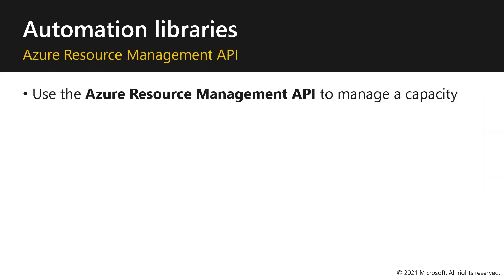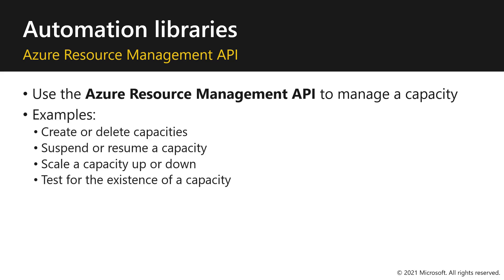Use the Azure Resource Management API to manage a capacity. For example, you can create and delete capacities, suspend or resume a capacity, scale capacity up or down, or test for the existence of the capacity. Note that these APIs are only relevant for the Azure SKUs.